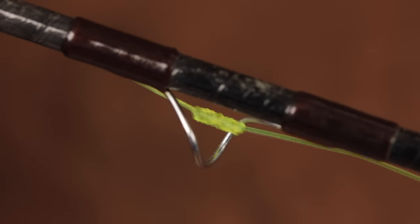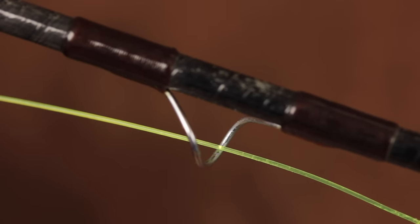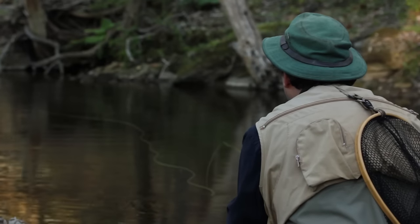The blood knot's smooth, elongated shape enables it to slip easily through rod guides and keeps it from picking up slime or debris in the water.